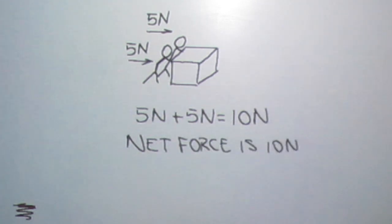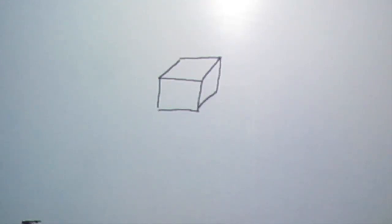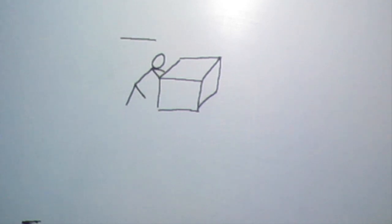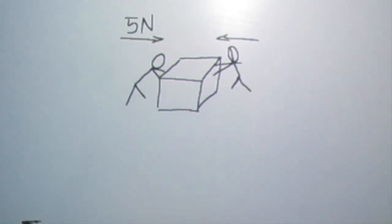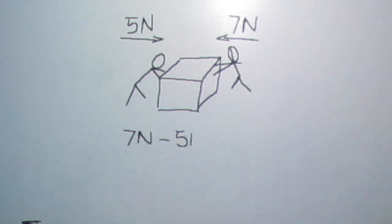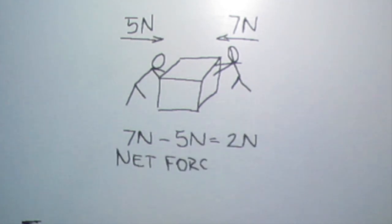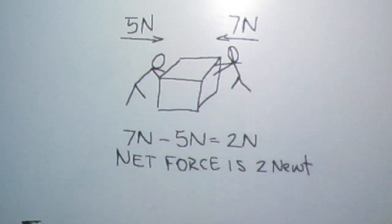If the forces are opposite from each other then we subtract the forces. In this example one person is pushing towards the right with five newtons and another person is pushing towards the left with seven newtons, then the net force will be two newtons. The box will move towards the left with two newtons of force.